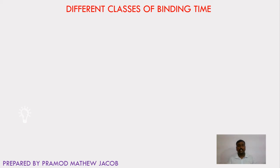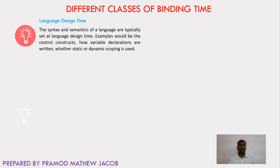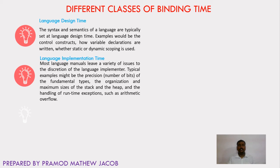Next, let's learn about the different classes of binding time. The first is language design time — the syntax and semantics of a language are typically set at language design time. The language designer defines what control constructs to follow, how variable declarations are written, and whether static or dynamic scoping should be used. The second is language implementation time — bindings here can include exception handling during runtime arithmetic overflow like division by zero, the maximum size for stacks and heap memory, and the precision or number of bits needed in the result of an arithmetic operation.